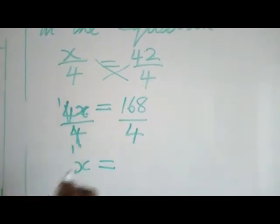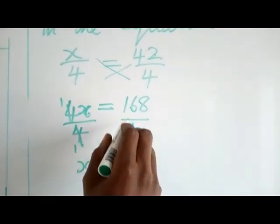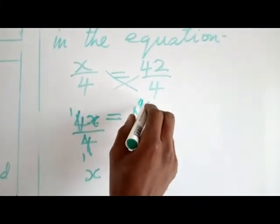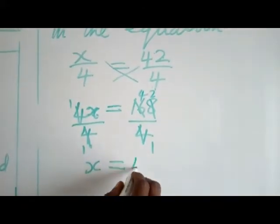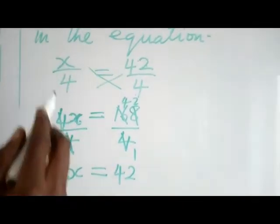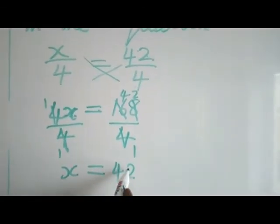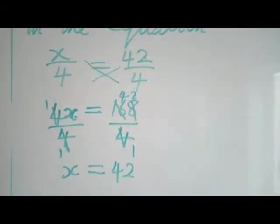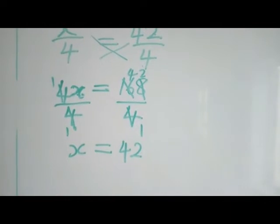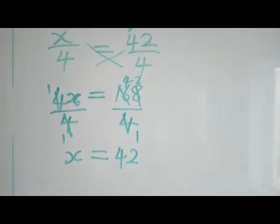x equals, let's divide this. 4 into 168: 4 into 16 is 4, 4 into 8 is 2. So we have 42. The value of x which was unknown now is known. You can now replace this x by 42. That is how to find the missing value.